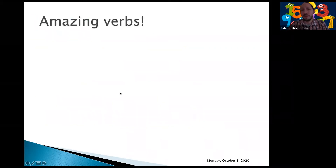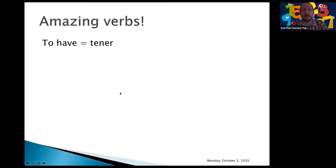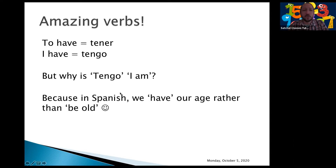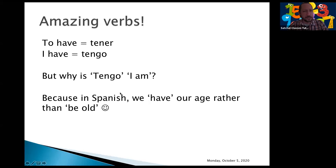The verb 'to have' — tener — is amazing because we use it a lot. 'To have' is tener, 'I have' is tengo. But why is tengo used for 'I am' with age? Because in Spanish we 'have' our age rather than 'be' old. Always remember that when you're talking about your age you're using tener — you're literally saying 'I have five years.' Although it sounds strange, it is the correct way in Spanish.